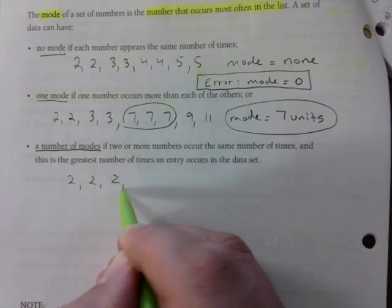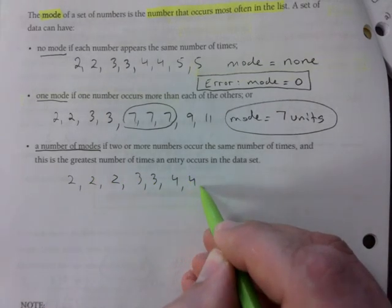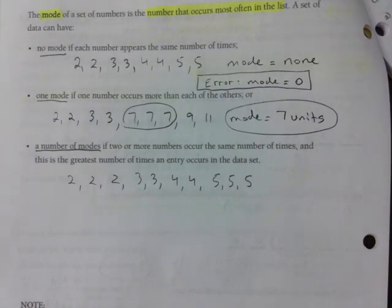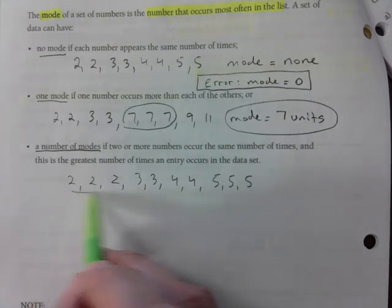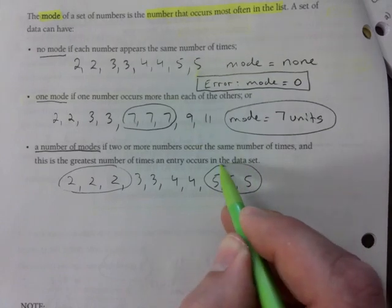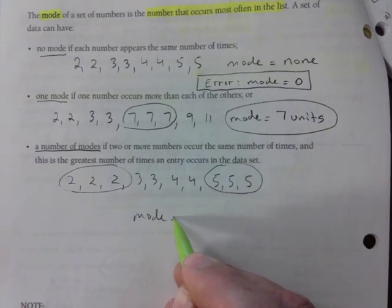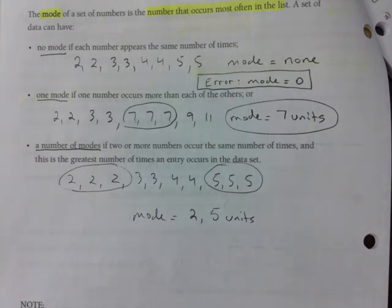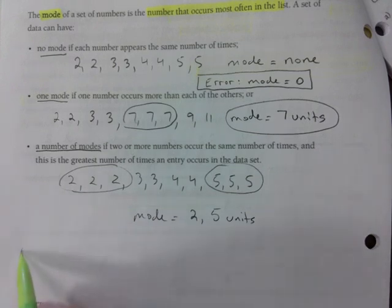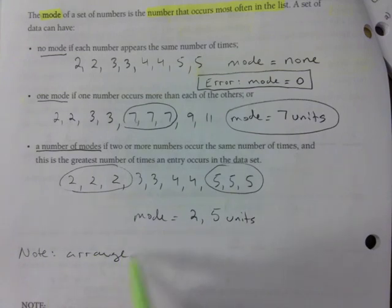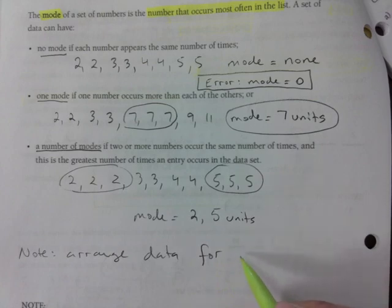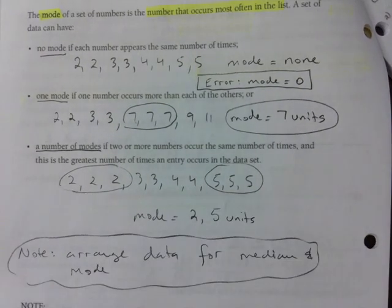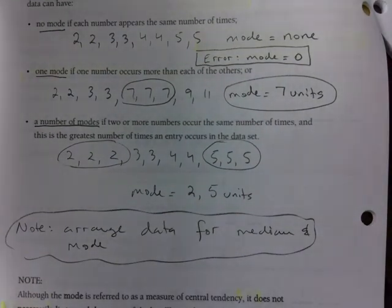One mode: if only one number occurs most often. For example, two, two, three, three, but then you've got three sevens — your mode is seven units, that's the number that occurs most often. Number of modes: two or more mode numbers occur the same number of times. If you have two, two, two, three, three, four, four, five, five, five — the mode would be two and five. Arrange your data for median and mode — that's very important.